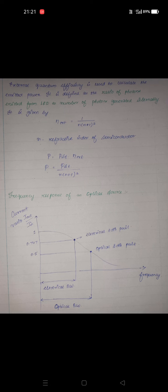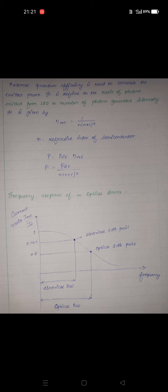The bandwidth can be expressed in two terms: electrical bandwidth and optical bandwidth. The electrical bandwidth is defined at the point where the current is 1/√2 of its total value, which is the electrical 3 dB point, and the corresponding frequency is the electrical bandwidth. The optical bandwidth is defined at the point where the current is reduced to half (0.5) of its original value — this is the optical 3 dB point.